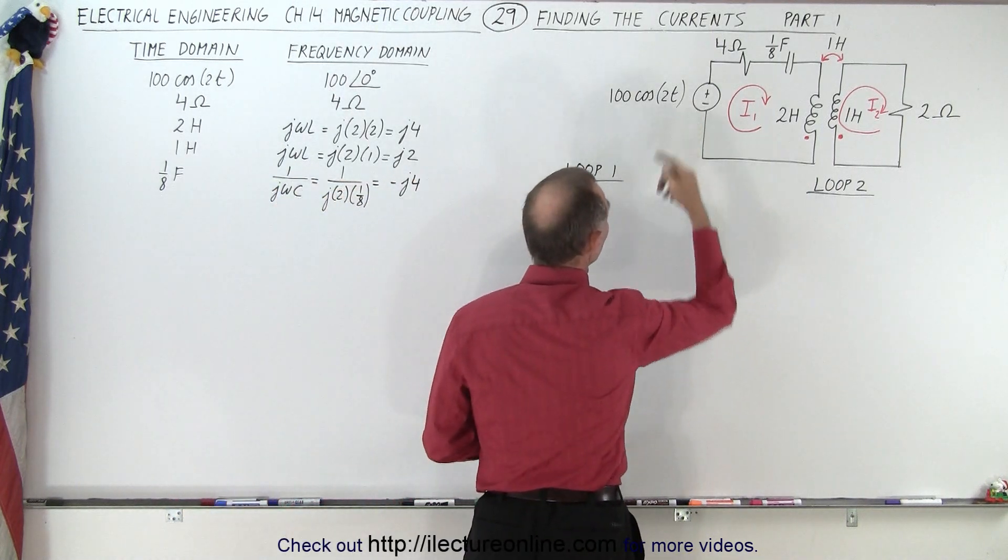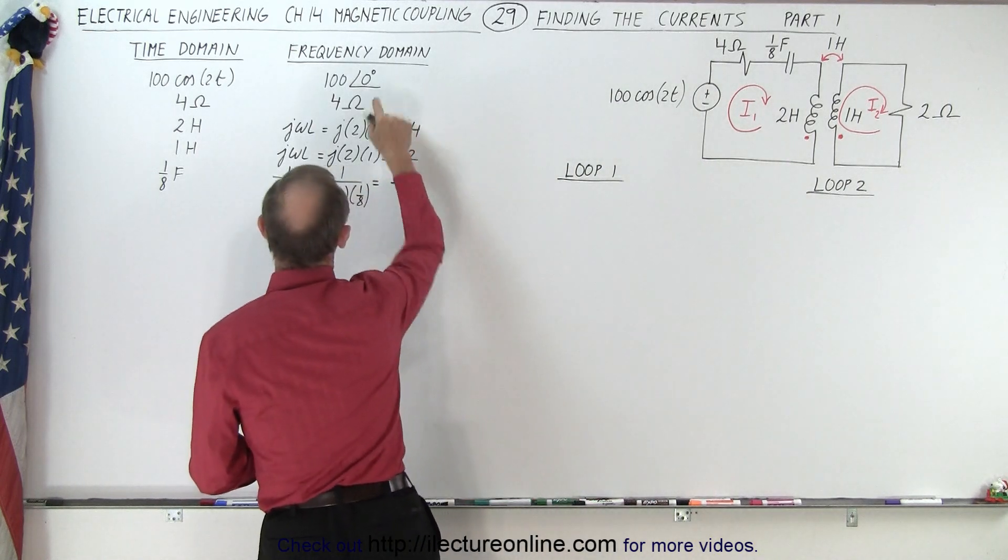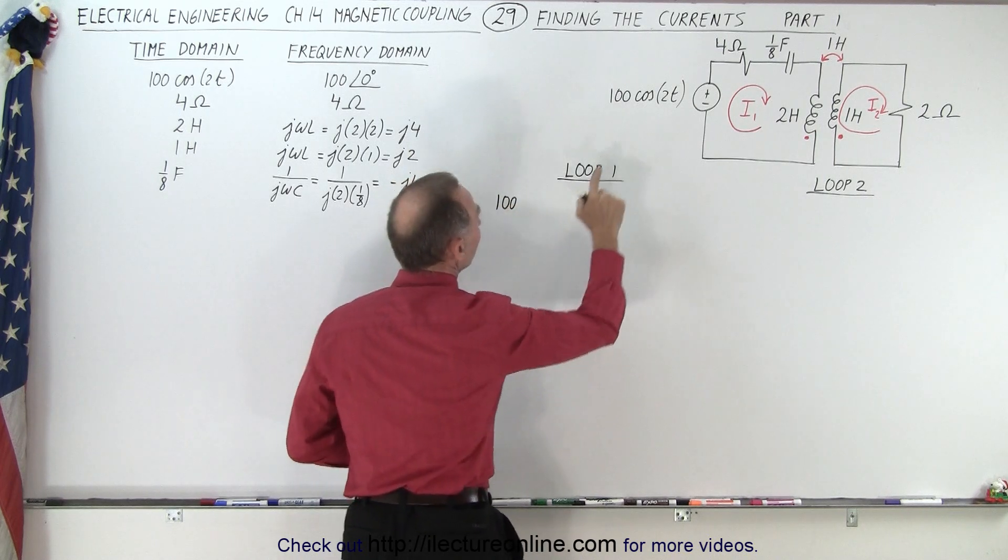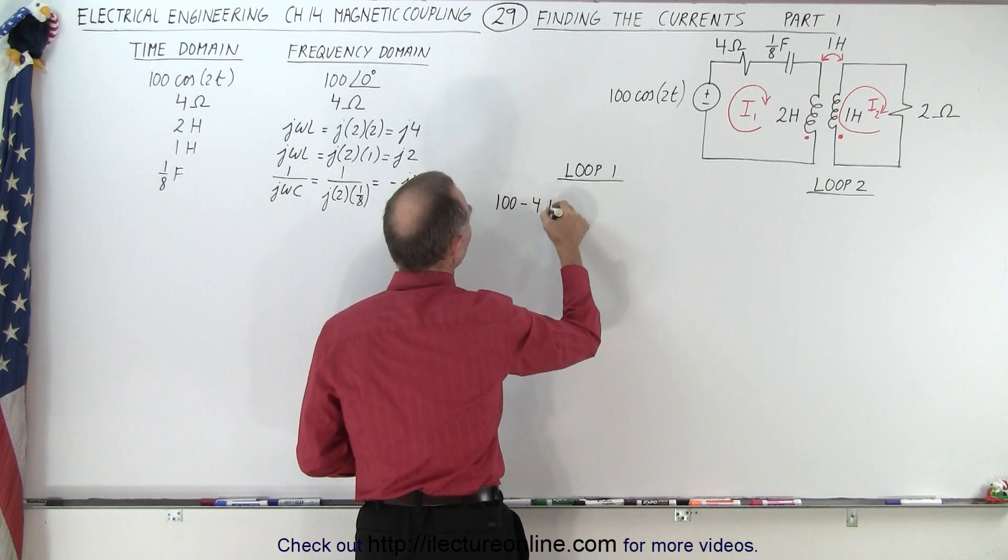All right, starting at the left corner right here, we go across the voltage supply and notice that it's simply equal to 100 volts. So we have a positive 100, the voltage rise. Then we have a voltage drop across the resistor, which is minus four times I1.